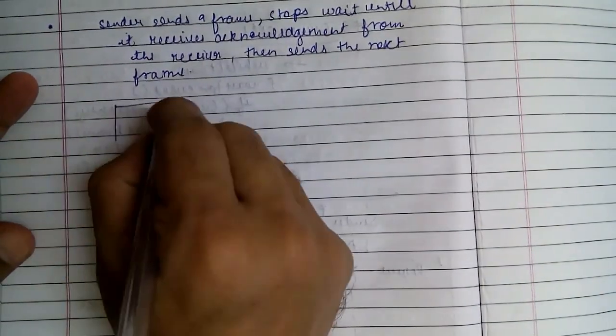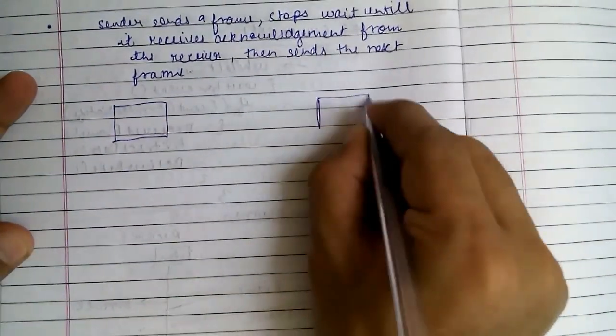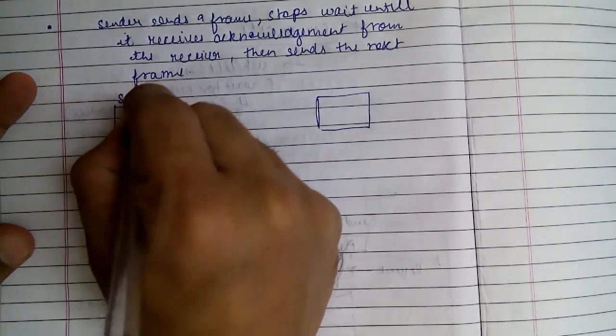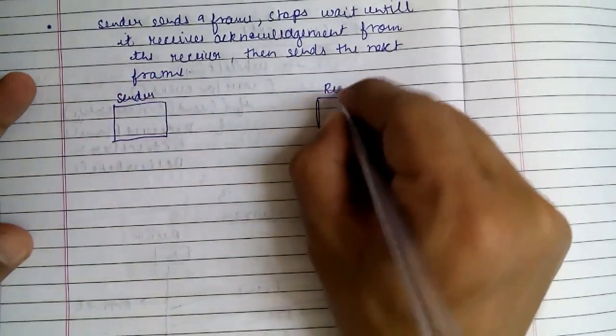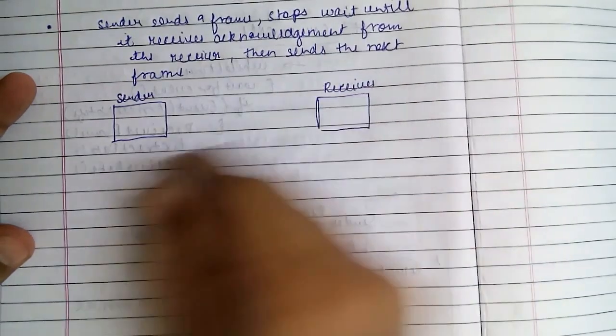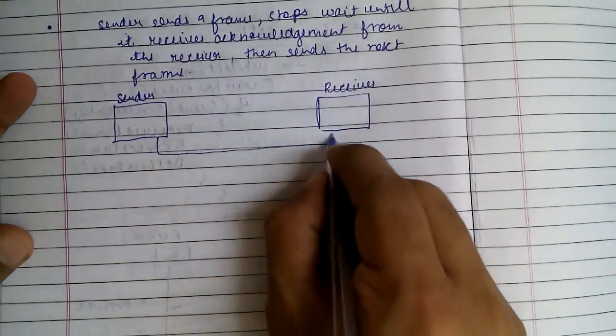Say this is the sender. This is the receiver. This is our data line.